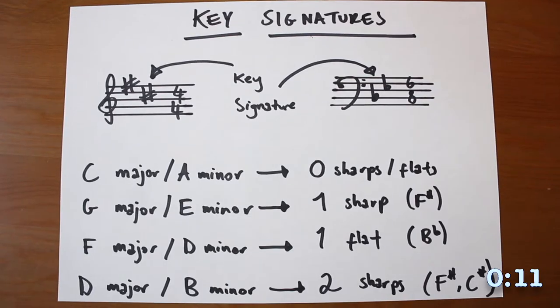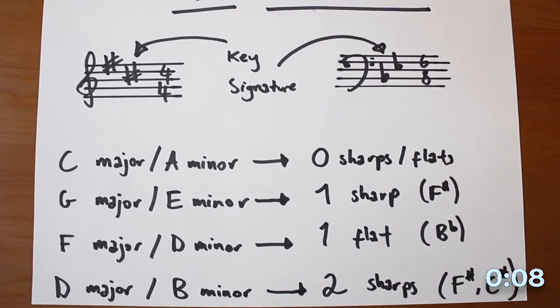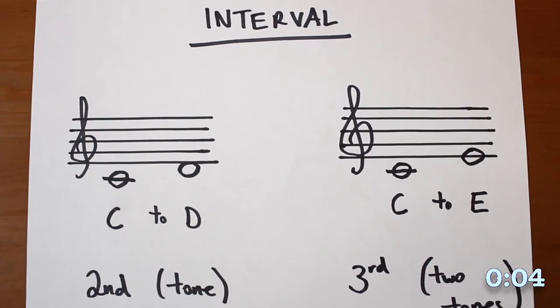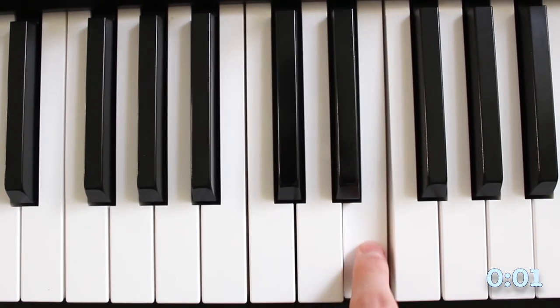The sharps and flats at the beginning are called key signatures, and split into major, happy sounding, or minor, sad sounding. An interval is a distance between two notes in the scale, so a C to a D is a second, a C to an E is a third.